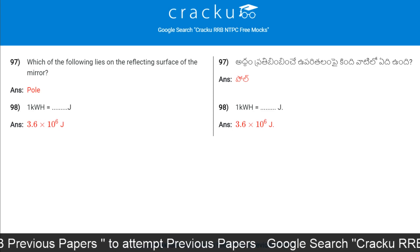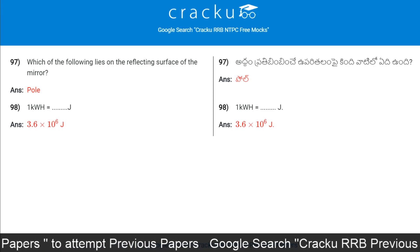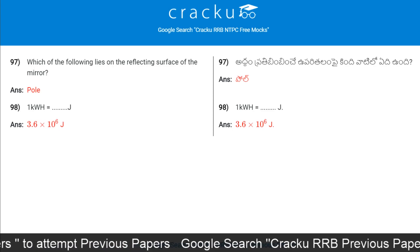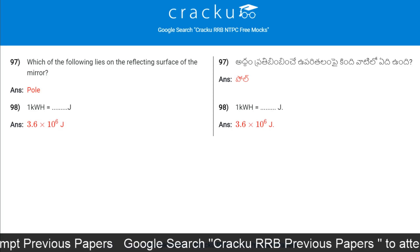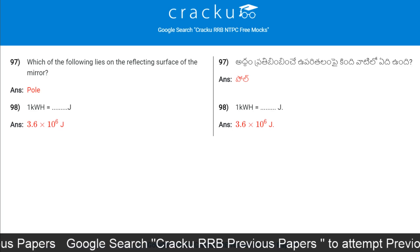One kilowatt hour is equal to 3.6 × 10 to the power of 6 joules.